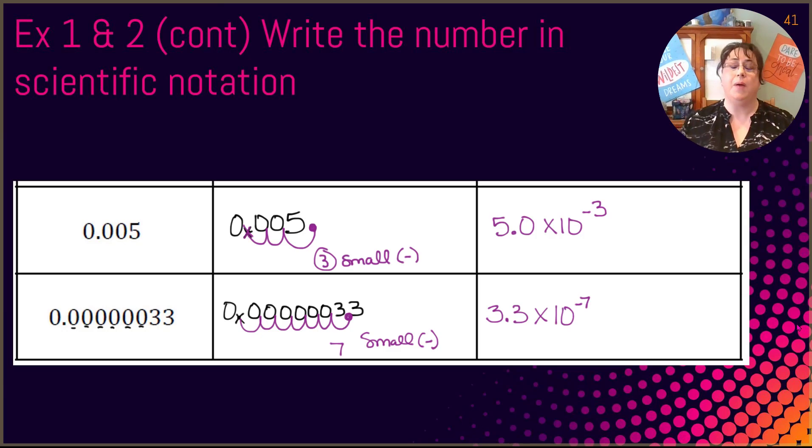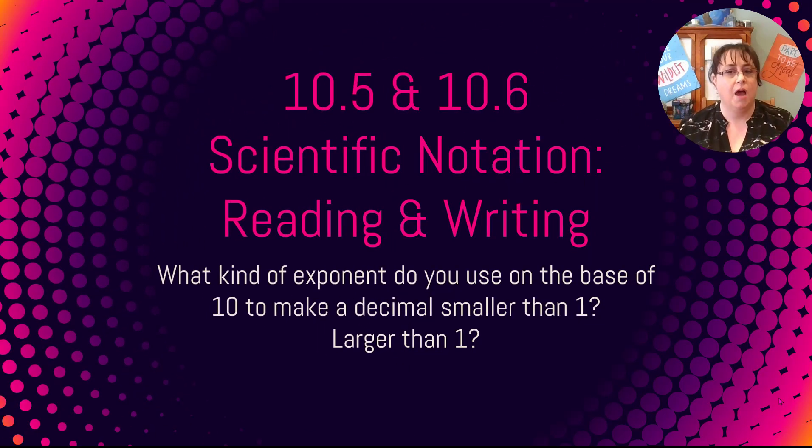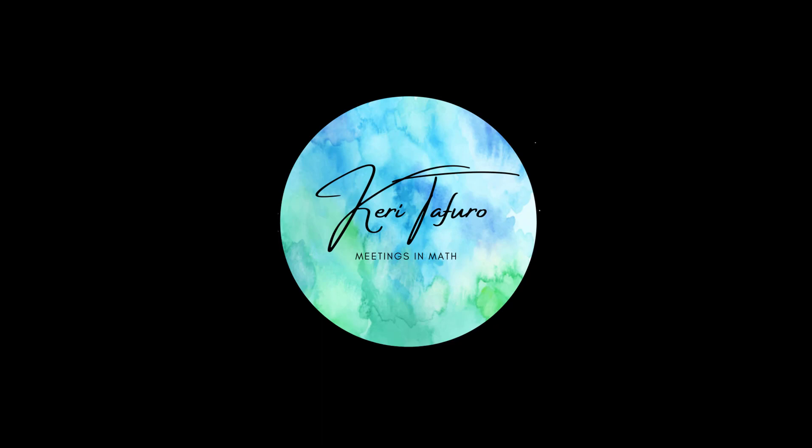How'd you do? I bet you did really well. Because you remembered that big numbers are going to be positive and small numbers are going to be negative. Keep on practicing. As you practice, you're going to get better at these. What kind of exponents do you use on the base of 10 to make those decimals smaller than 1 and larger than 1? In other words, decimals and then big numbers. Those are those big questions I want you to be able to talk about when you come to class. Thank you so much for joining us. And remember, be kind to one another because we all can use some extra kindness in our lives. Bye for now.